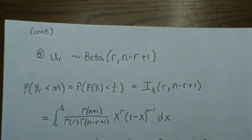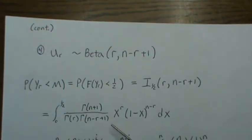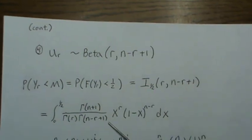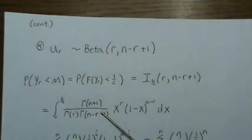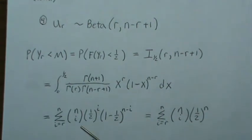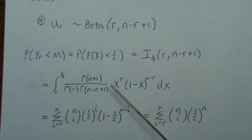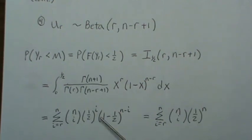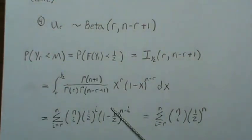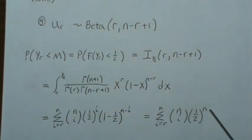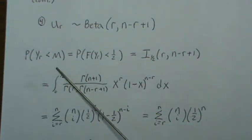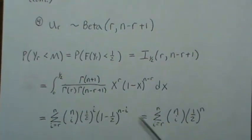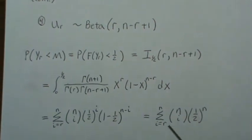Now I have another video, which I'll put a link in the description, that associates an incomplete beta function with the sum of binomial weights. So this is equal to this sum. And since it's one half, those can be combined into one half to the N. So this probability is as simple as summing from R to N.